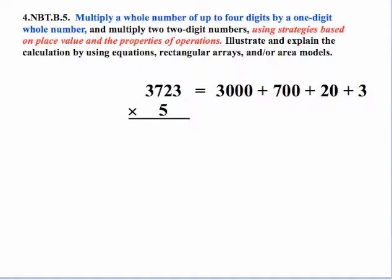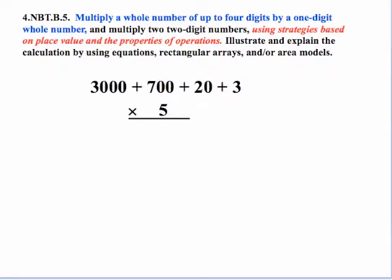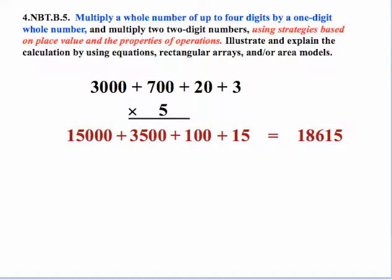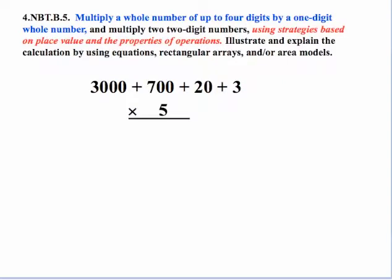So let's take 3,723 and break it down by place value. And now we can do the multiplication by 5, but we're doing it separately. So we have 5 times 3 is 15, 5 times 20 is 100, and so forth, and then we combine them together to get our product of 18,615.